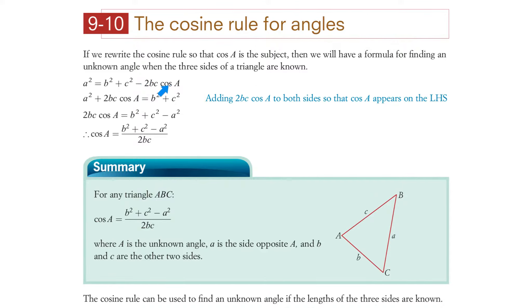Right, so that's what we learned as the cosine rule, and if you rearrange it, you can put it in this form with cosine A equals B squared plus C squared minus A squared all over 2BC.